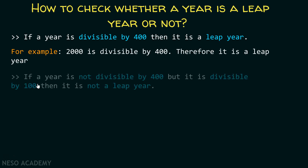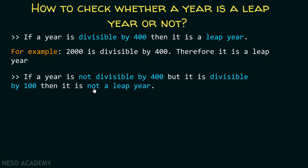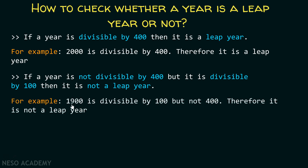The second condition is: if a year is not divisible by 400, but it is divisible by 100, then it is not a leap year. For example, 1900 is divisible by 100 but it is not divisible by 400, therefore it is not a leap year.